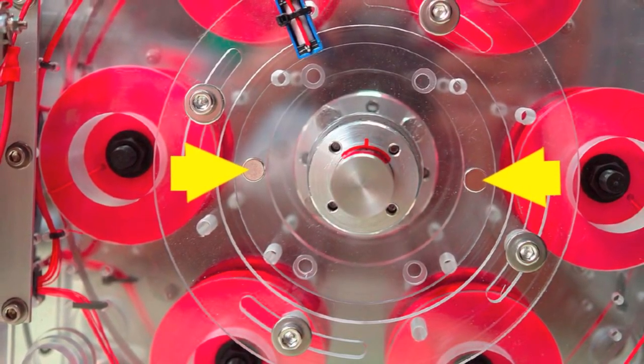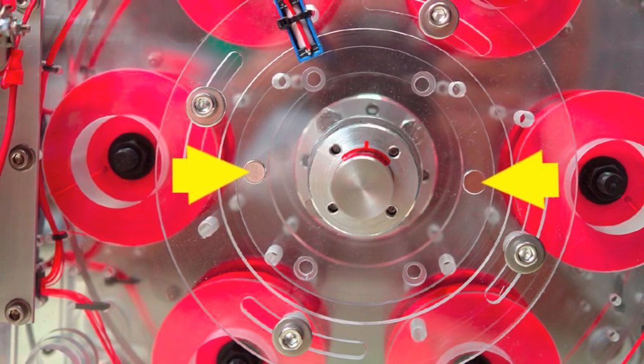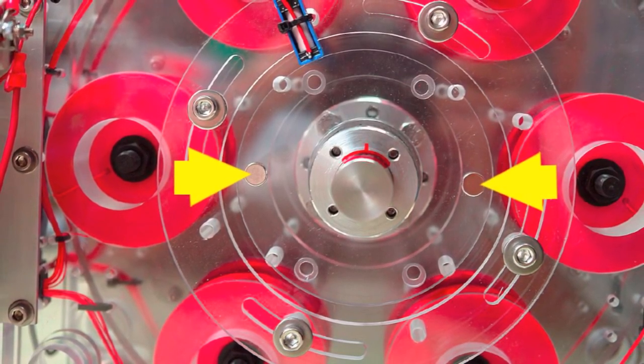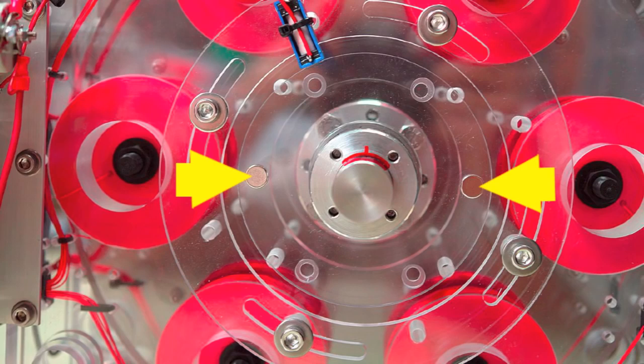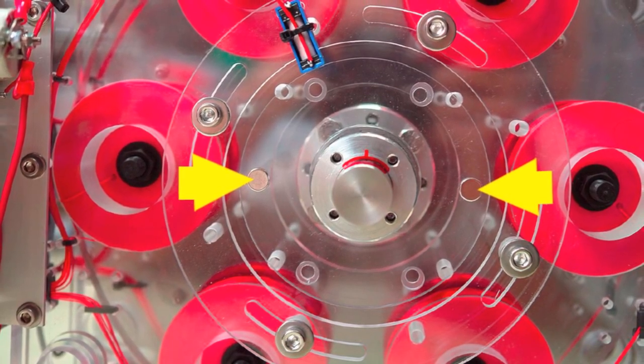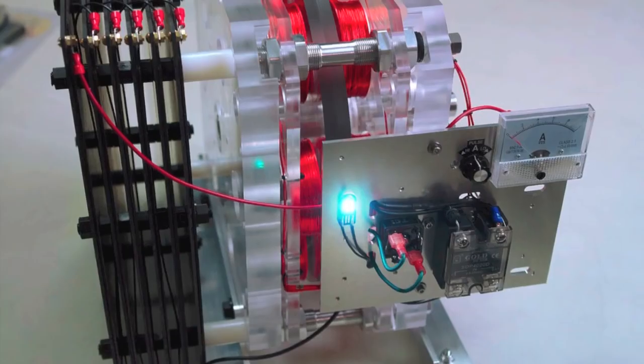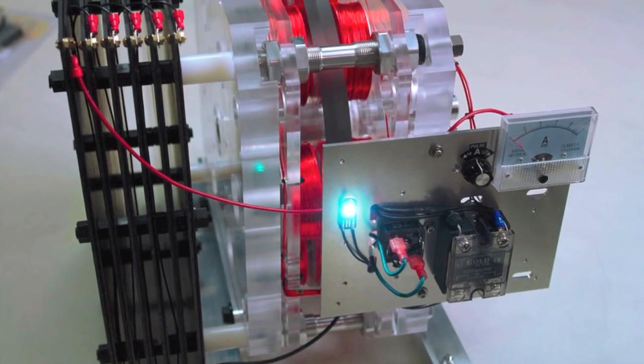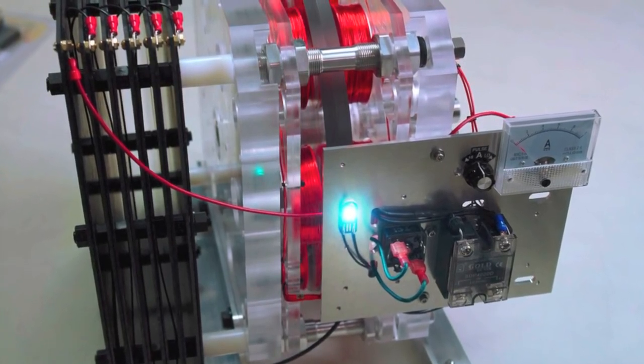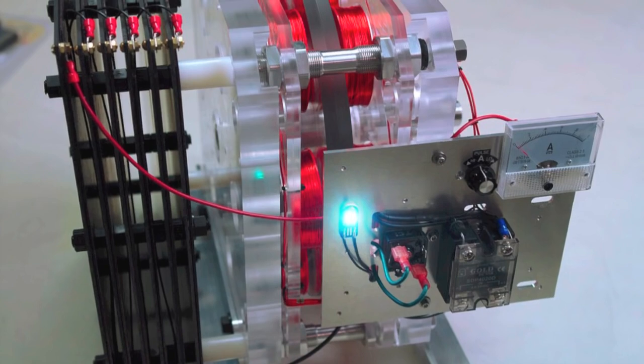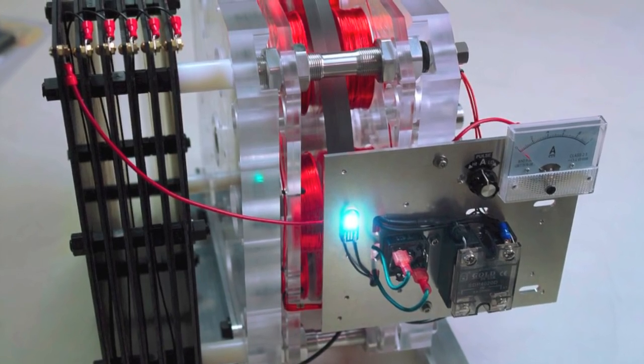That being said, here is the timing disc and the yellow arrows indicate there's only two magnets on the disc, so it pulses all the coils just twice per revolution. But it's your choice to pulse anywhere from one to six times per revolution. The idea being, instead of the light, you can use these high voltage spikes to charge batteries instead.